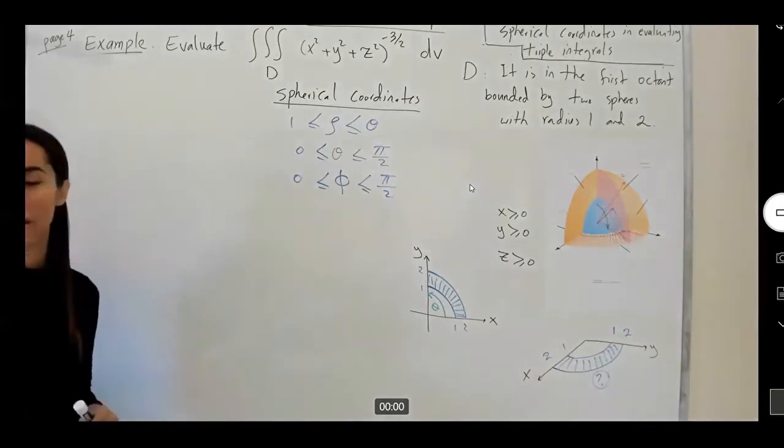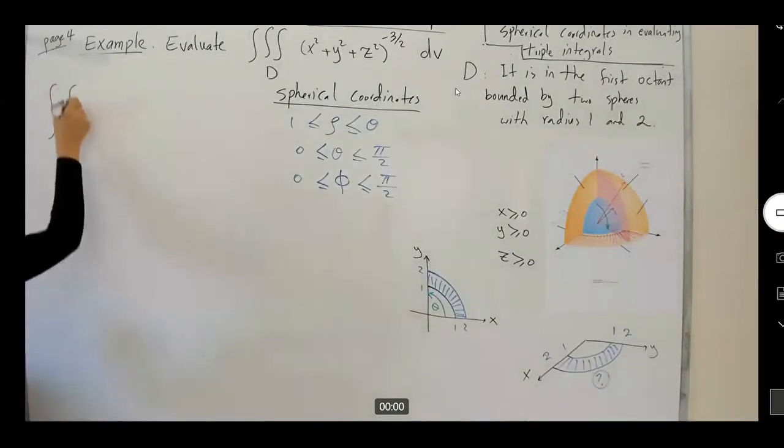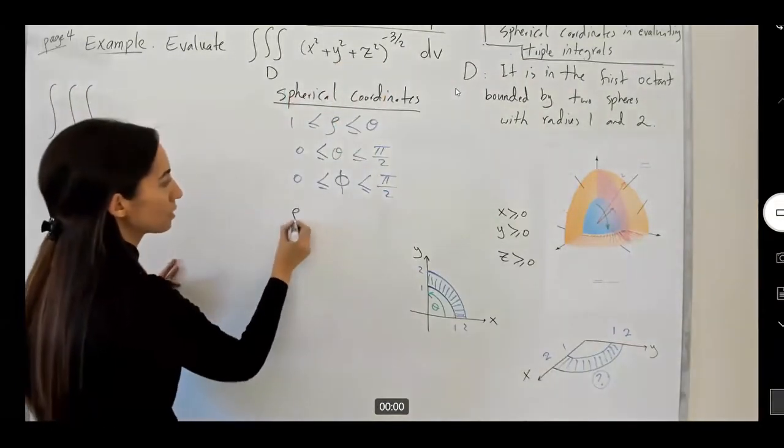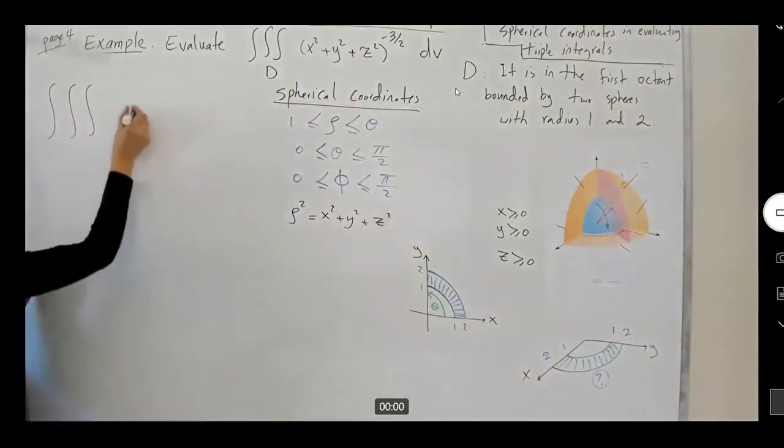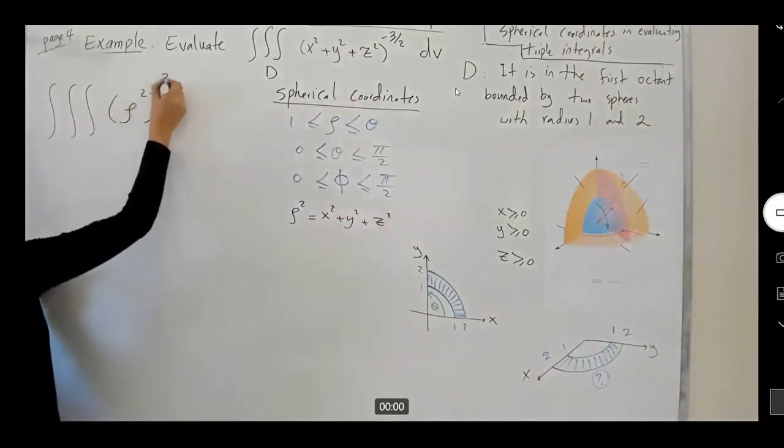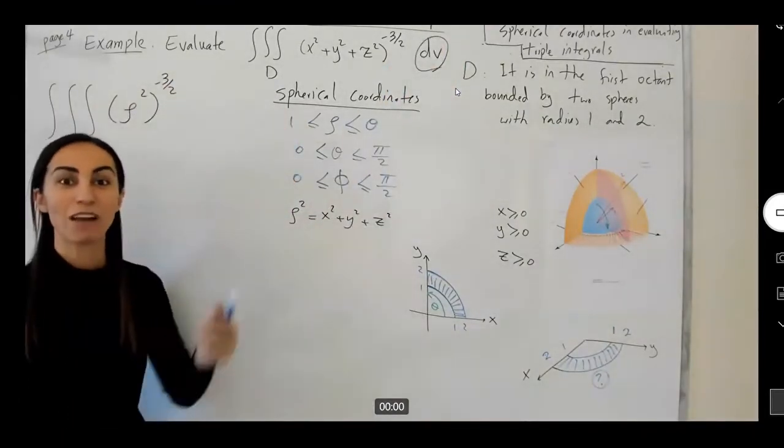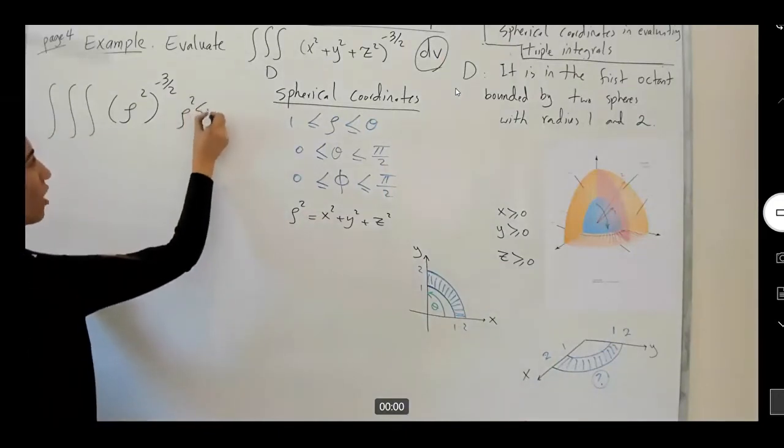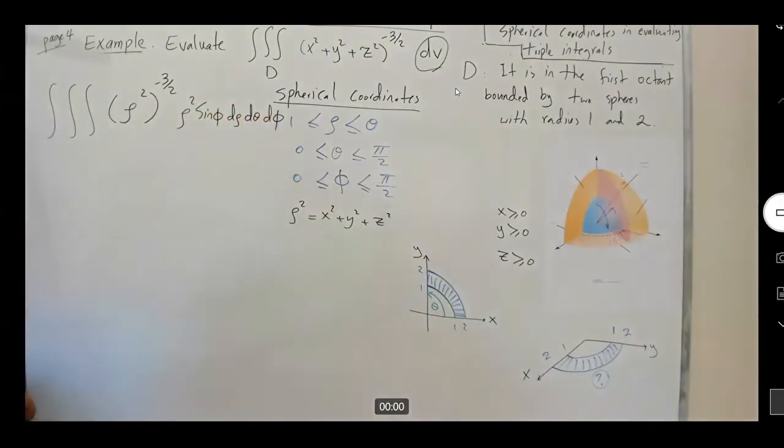Okay, you're ready to set up the triple integral. So our triple integral says, you have triple integral of x squared plus y squared plus z squared. Remember that rho squared is x squared plus y squared plus z squared. So I have rho squared raised to negative three halves and my dV. My dV is very important. You have rho squared sine phi d-rho d-theta d-phi.